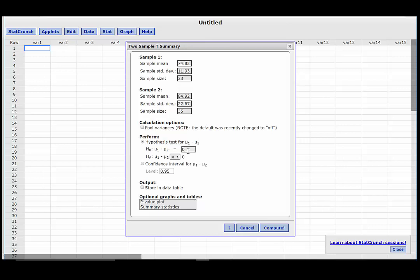We are testing if there is a difference, so our null hypothesis will be equal to 0. This is a one-tailed test to the left, so the alternative hypothesis will say less than. The problem told us not to assume that the population standard deviations are equal, so we should leave the pool variances box unchecked.